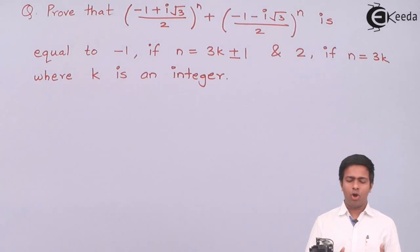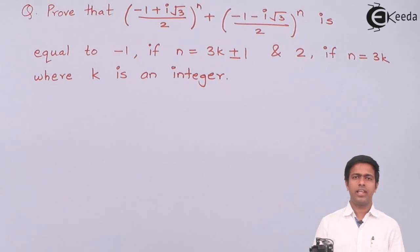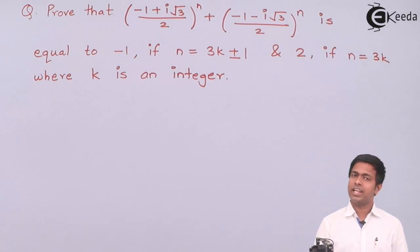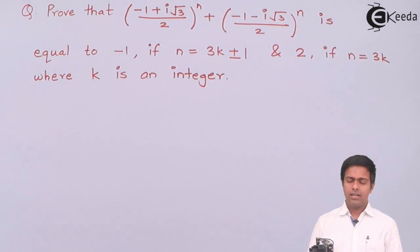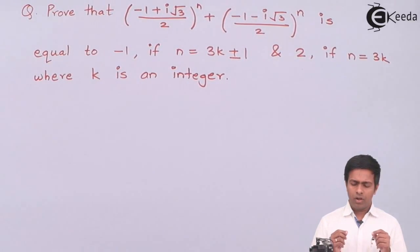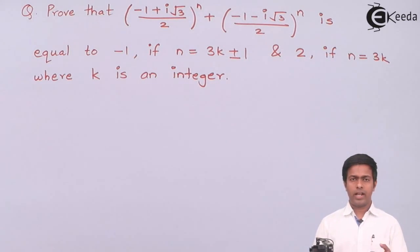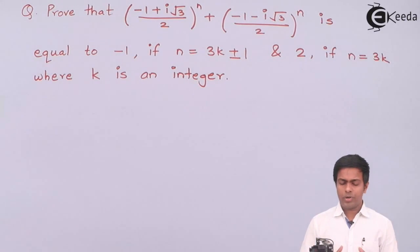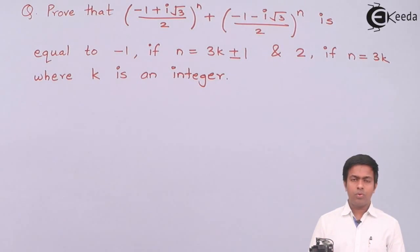Hi students, let's solve another problem on De Moivre's theorem. We have to prove that [(-1 + i√3)/2]^n + [(-1 - i√3)/2]^n equals -1 when n = 3k ± 1, and equals 2 when n = 3k. So we have two conditions and two different results to prove.